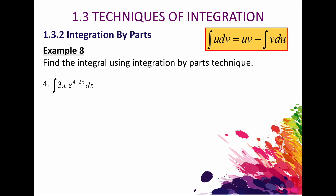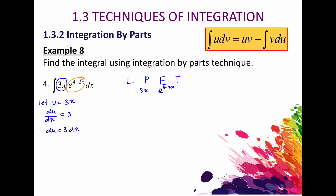Now question number 4. We have 3x and e to the power of 4 minus 2x. Based on the LIATE rule, 3x is a polynomial and e is an exponential, so it's clear we let u equal to 3x. So du equals 3 dx, and dv equals e^(4−2x) dx.